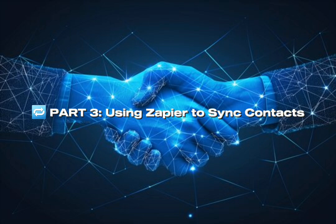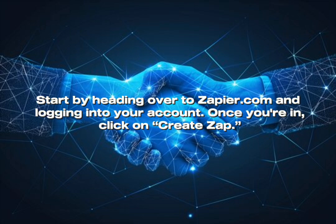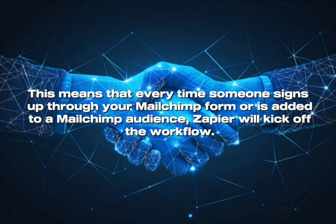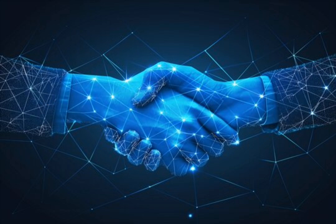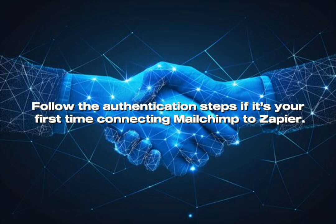Part 3: Using Zapier to Sync Contacts. Let's look at how to automate the integration using Zapier. Start by heading over to zapier.com and logging into your account. Once you're in, click on Create Zap. For the trigger app, choose Mailchimp and set the trigger event to New Subscriber. This means that every time someone signs up through your Mailchimp form or is added to a Mailchimp audience, Zapier will kick off the workflow. Then you'll be asked to select your Mailchimp account and the specific audience you want to monitor. Follow the authentication steps if it's your first time connecting Mailchimp to Zapier.